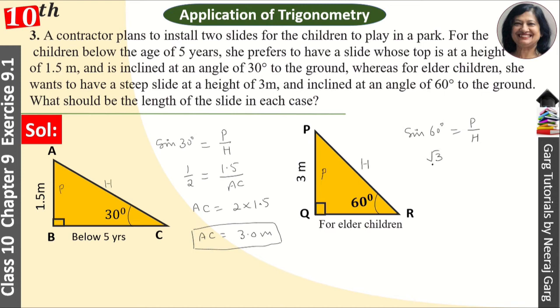We will find the triangle here. Perpendicular is 3 meter, so 3 upon hypotenuse PR. Cross multiply. Root 3 PR, that is equal to 3 into 2. Then PR is equal to 6 upon root 3.